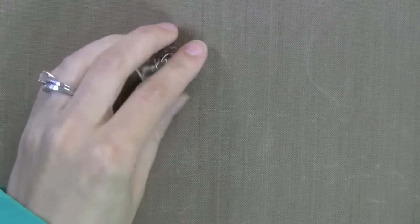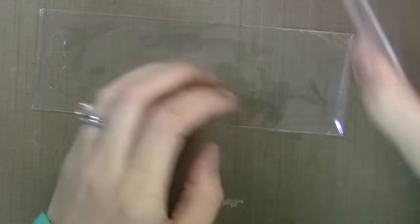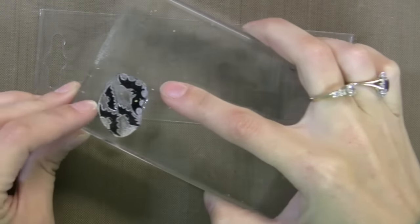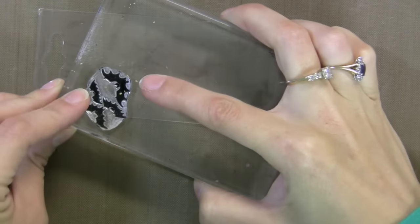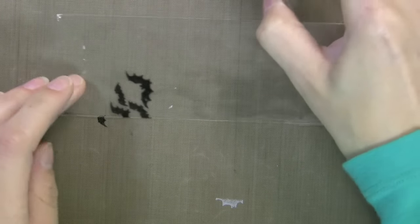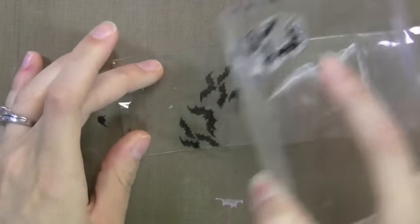So I'm going to mount this onto an acrylic mount and I'm going to stamp it onto one of these clear bags with black Stazon ink. I like to use black Stazon ink or white Stazon ink. Those are my two favorites because they come out so vivid.